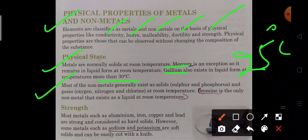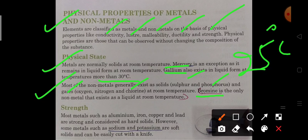Most of the non-metals generally exist as solids like sulfur and phosphorus, and gases like oxygen, nitrogen and chlorine. But one is the exception, that is bromine, which is the only non-metal which exists in liquid state at room temperature.